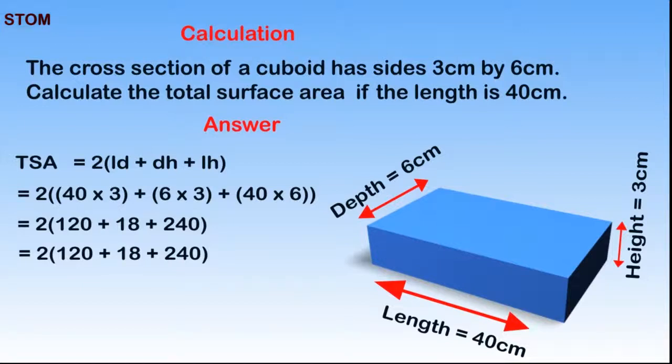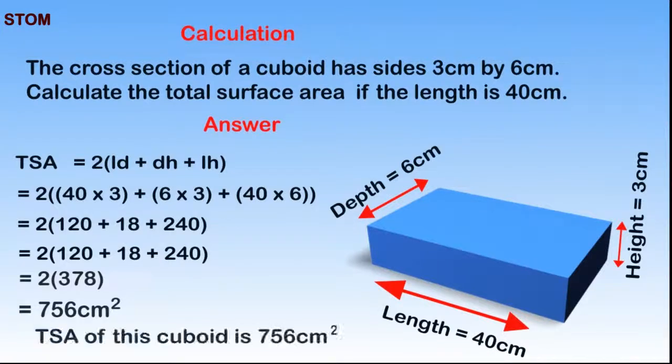When we add up all these figures together, it gives us 378cm. We can then multiply 2 by 378cm. This will give us 756cm. Therefore, the total surface area of this cuboid is 756 cm squared.